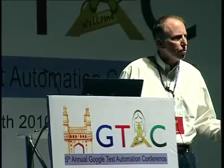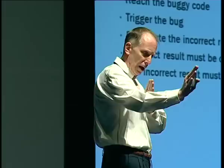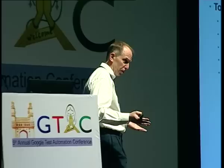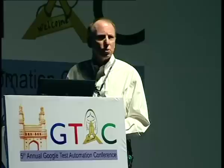Before going further, I want to introduce a little bit of theory about testability. To reveal a bug, a test has to do several things that all line up. You have to get the buggy code to execute. You have to trigger the bug at that code location — executing a piece of code that has a defect does not necessarily mean it fails. When it does fail, we have to propagate the incorrect result to something that's observable. There has to be an observer of the incorrect result, and the incorrect result must be recognized as such by the observer.